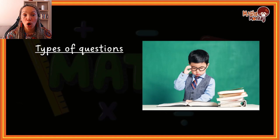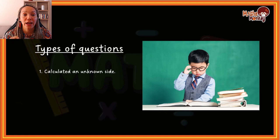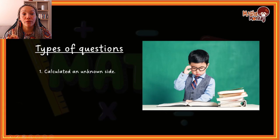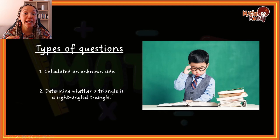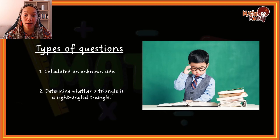At this level you are only required to understand two ways of answering questions. The first is if they give you a right angle triangle with two lengths and you have to calculate the third length. The second type of question is where they ask you to use the formula to prove that something is a right angle triangle. I'm going to show you an example of each.